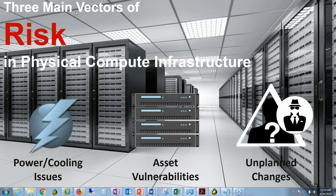The main vectors of risk that exist in the data center surround three aspects: the physical compute infrastructure, power and cooling issues, asset vulnerabilities, and unplanned changes — changes that were made undocumented or outside of process, whether by mistake or perhaps even nefarious in nature. These are the three things we're going to concentrate on today and show you how Enlight can help you with understanding each of them and reducing your risk surface area.